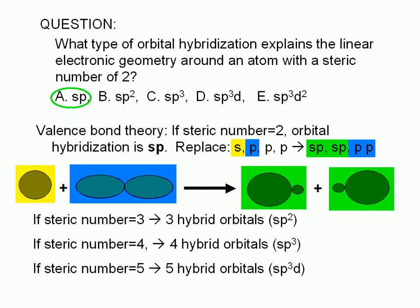For a steric number of 5, five orbitals are hybridized, and the hybrid orbitals are called SP3D. For a steric number of 6, the six hybrid orbitals are called SP3D2.